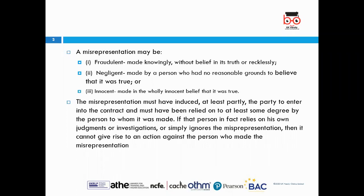A misrepresentation may be fraudulent, which is made knowingly, without belief in its truth, or recklessly. Negligent, which is made by a person who had no reasonable grounds to believe that it was true. Or innocent, which is made in the wholly innocent belief that it was true. The misrepresentation must have induced at least partly the party to enter into the contract and must have been relied on to at least some degree. If that person relies on their own judgments or investigations, or simply ignores the misrepresentation, then it cannot give rise to an action.